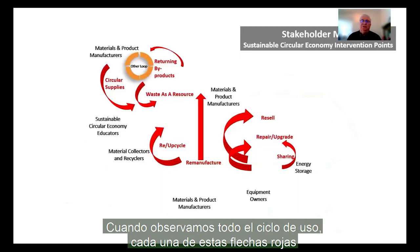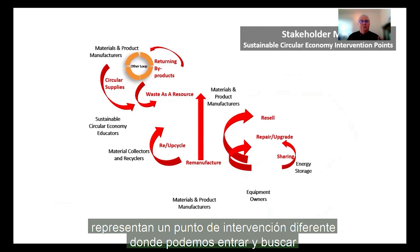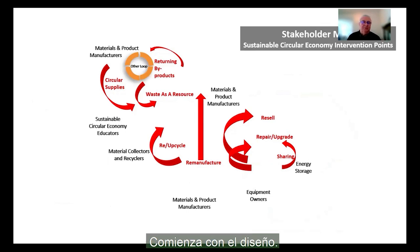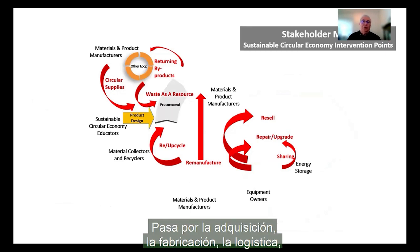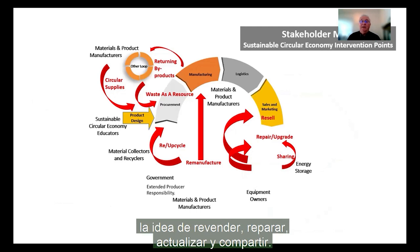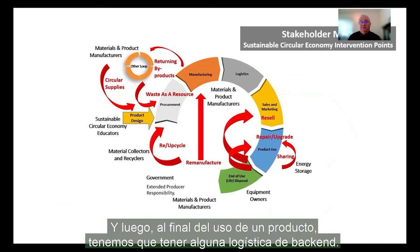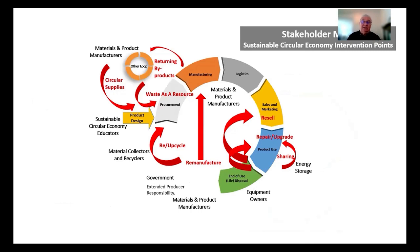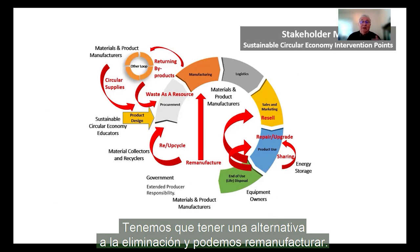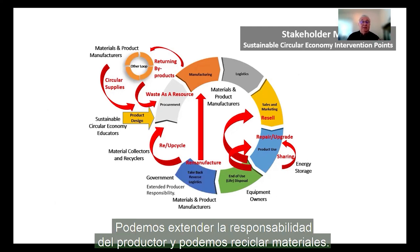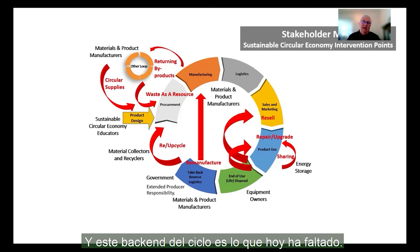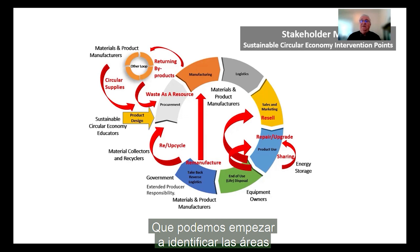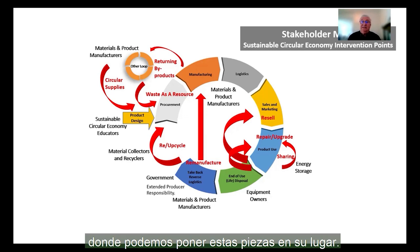When we look at the whole use cycle, each of these red arrows represents a different intervention point where we can look for opportunities to reuse materials. It starts with design, goes through procurement, manufacturing, logistics, into sales and marketing, where we can even have the idea of reselling, repairing, upgrading, and sharing. Then at the end of the use of a product, we have to have back-end logistics — an alternative to disposal. We can remanufacture, take back, have reverse logistics, extended producer responsibility, and we can recycle and upcycle materials. This back end of the cycle is what to date has been missing, but we can begin to identify areas where we can put these pieces into place.